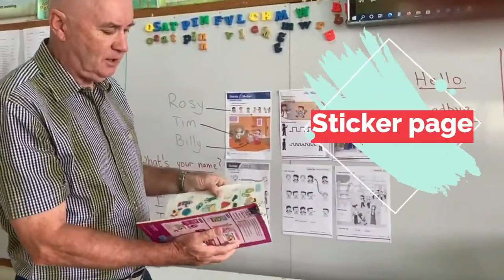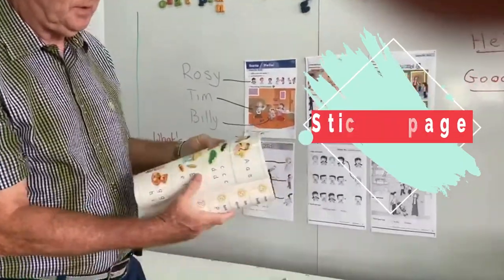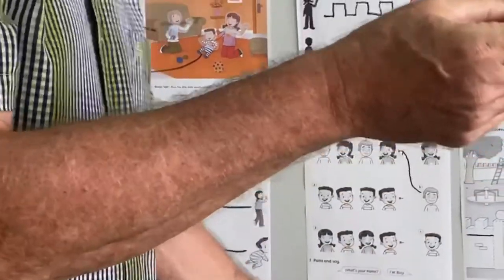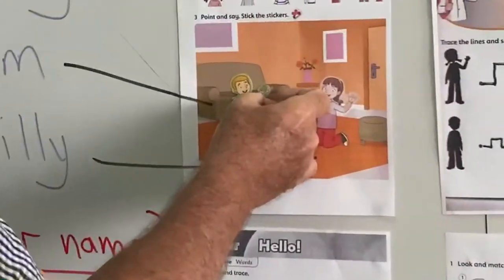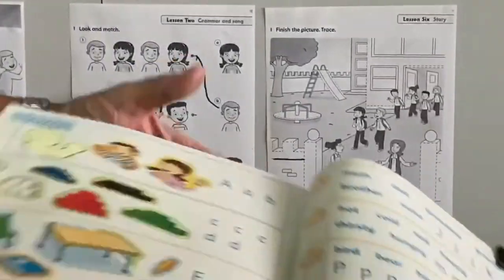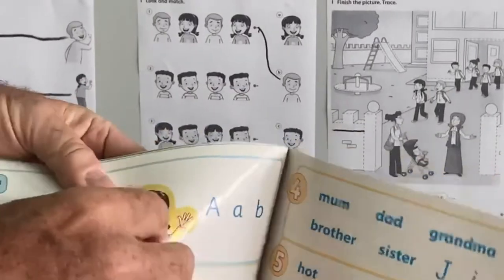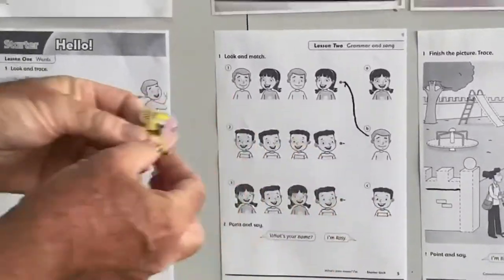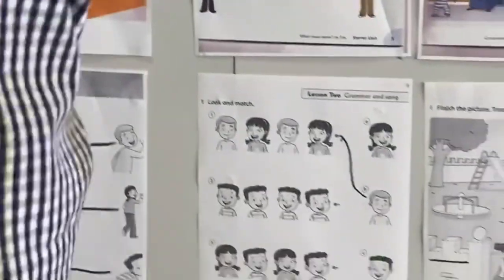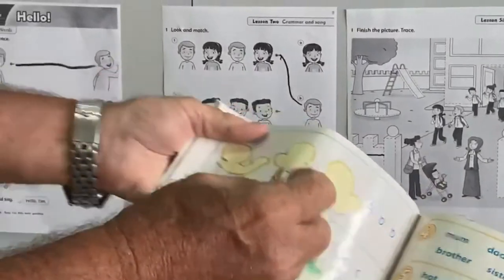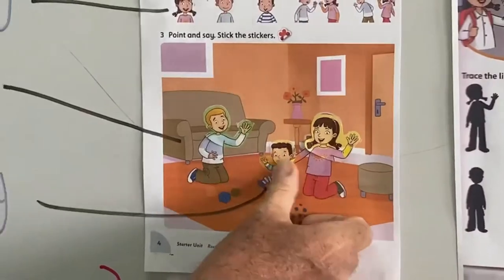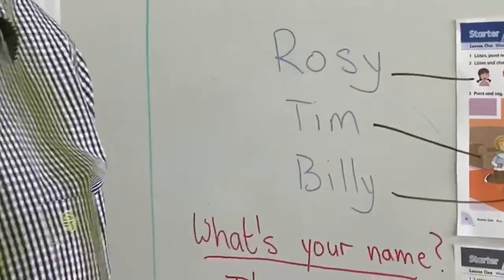Now if you go to the back of the student book, you can see the stickers and we can put them on the page. Here's Tim — let's put Tim just there. There he is. The girl Rosie — let's put Rosie, like that. And the little baby Billy — let's put Billy. There he is. See if you can do that.